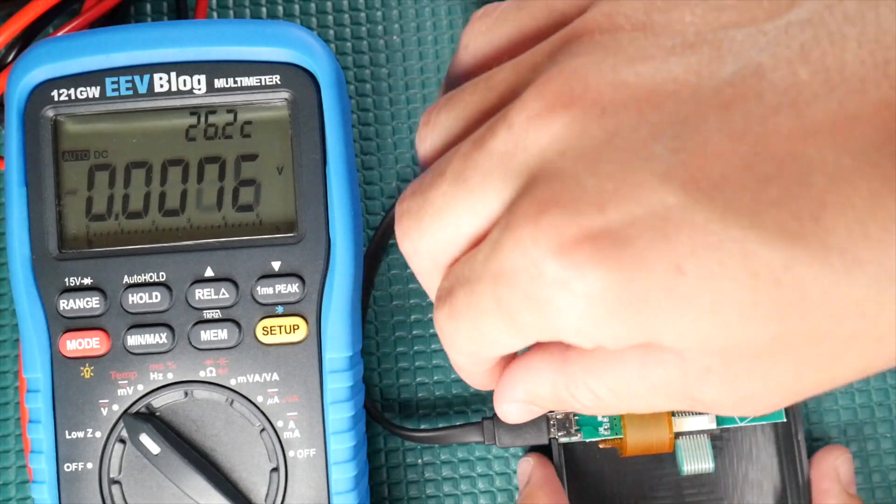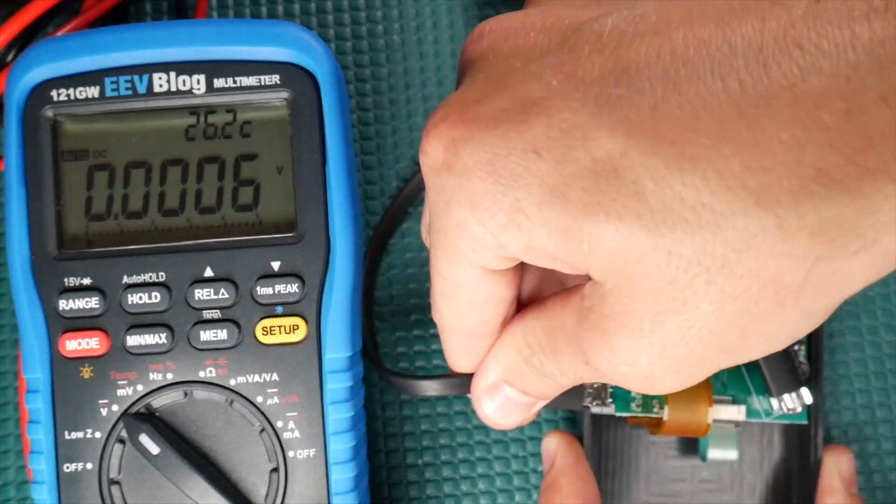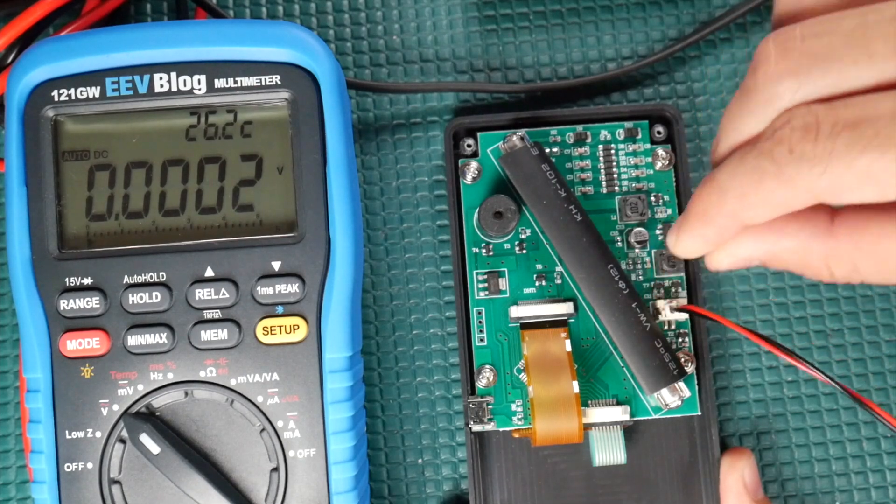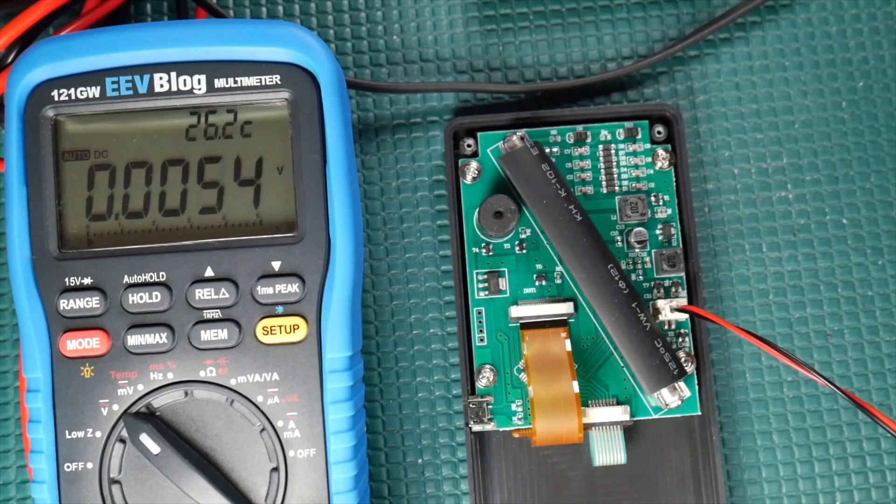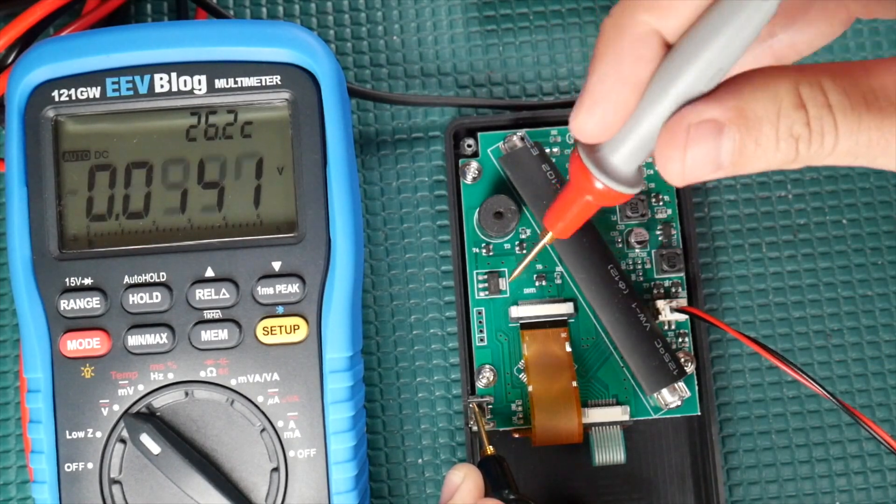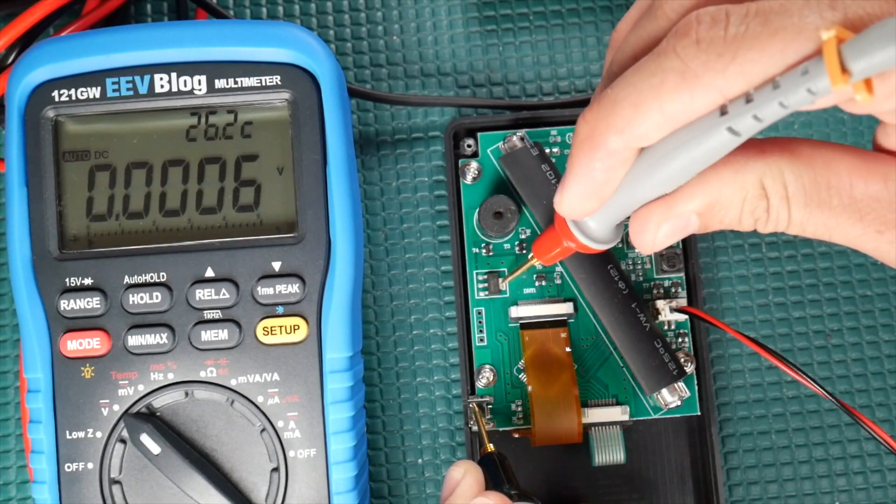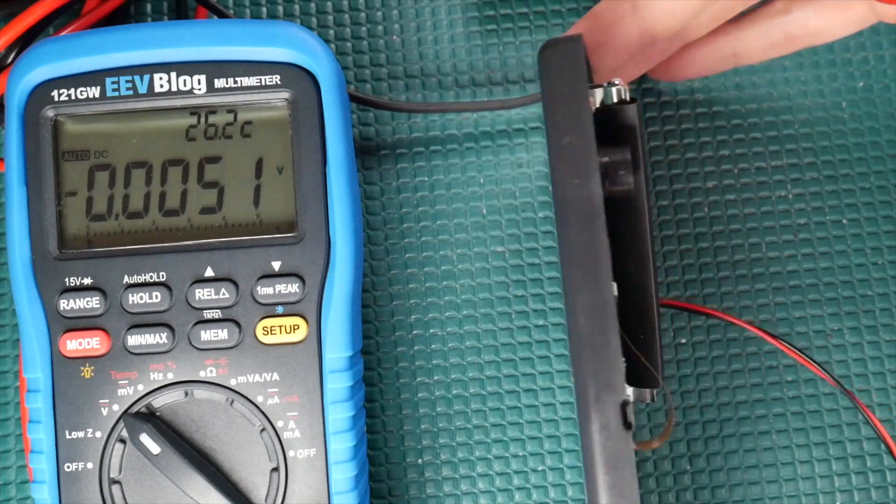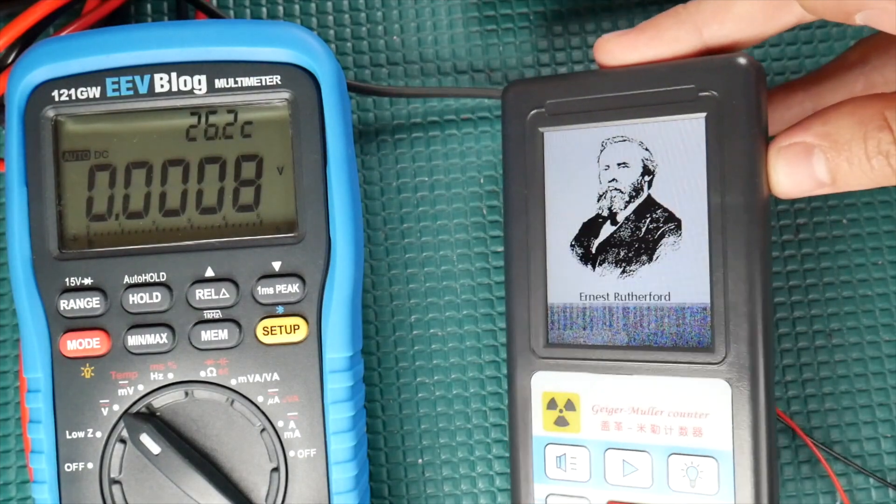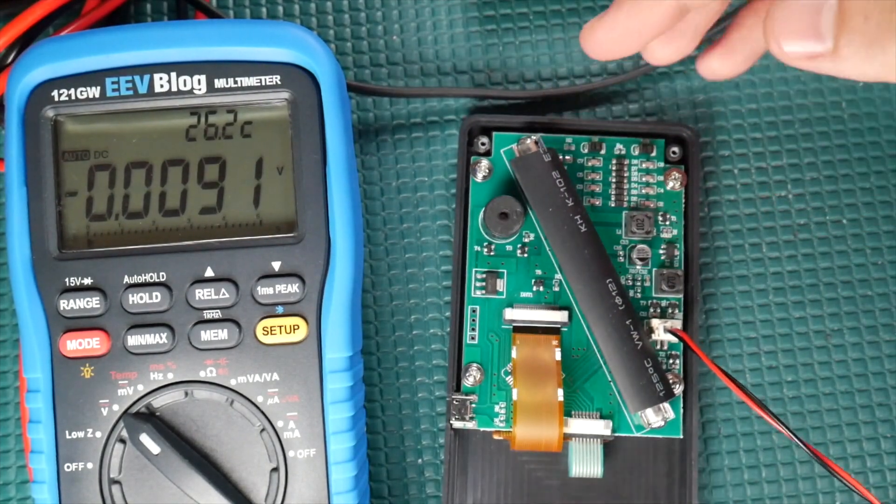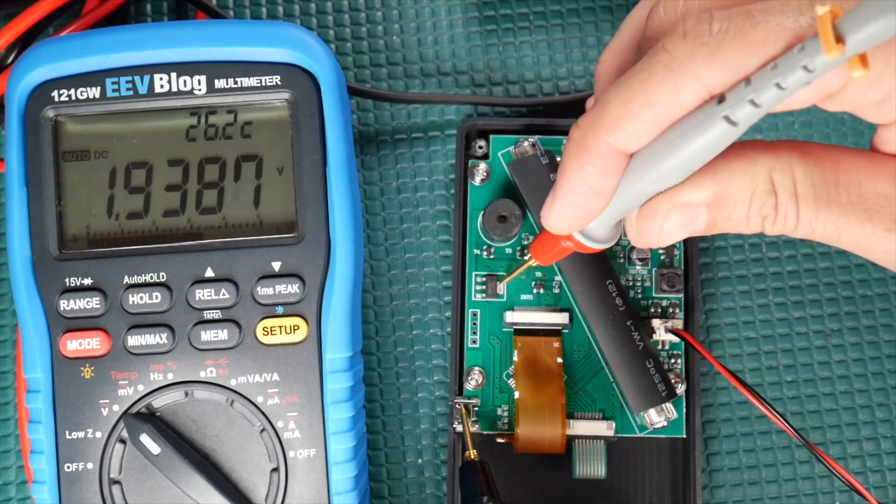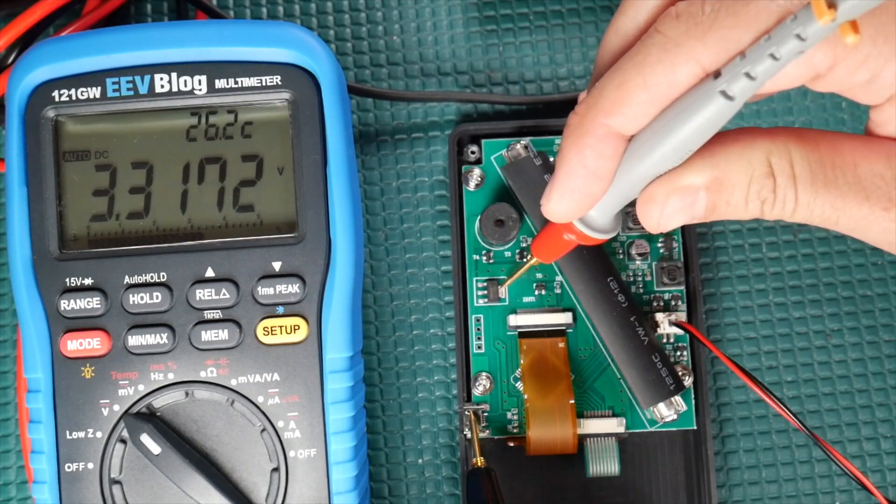And I can even see the processor down there below this ribbon cable. And I bet if we grab a measurement off of that little decoupling capacitor there, there we go, 3.3 volts. So everything is running at 3.3 volts, and it powers on immediately because it's just going straight through this linear regulator and powers up the board.